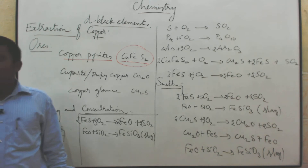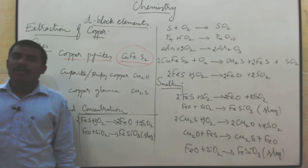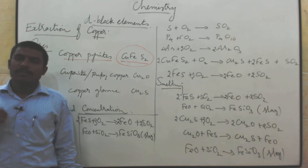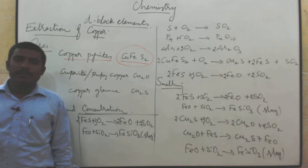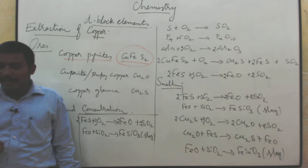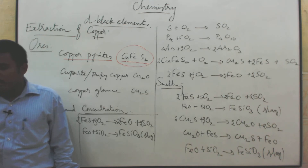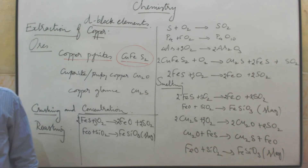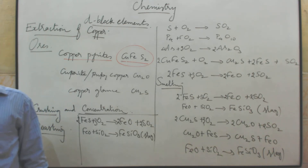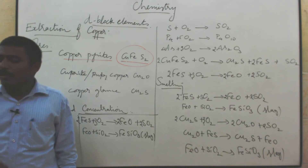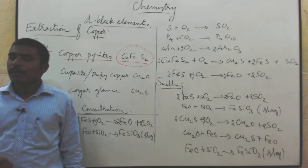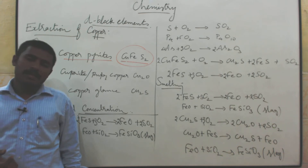Now the unwanted material is removed and you get pure copper — but wait, it is not pure copper, only 98% pure. That impure copper is called blister copper.